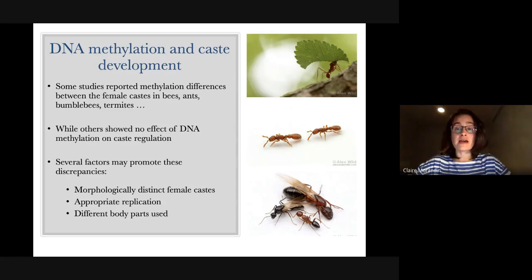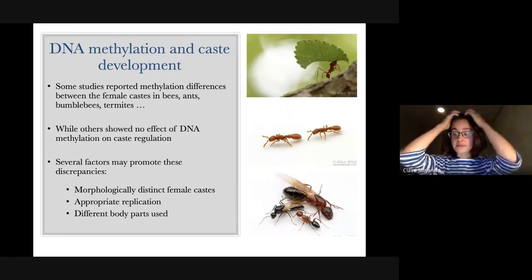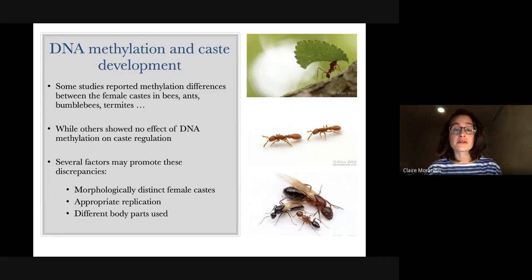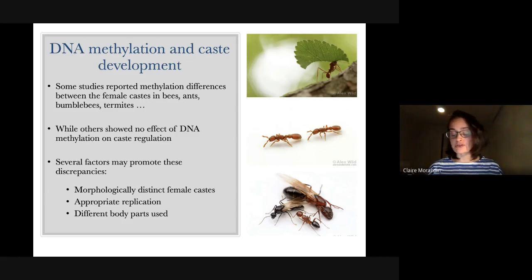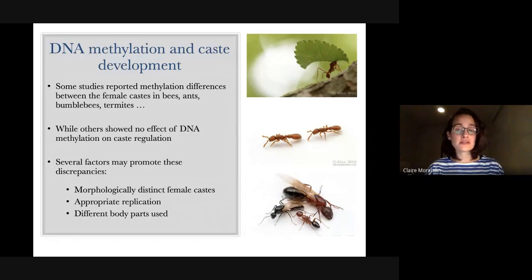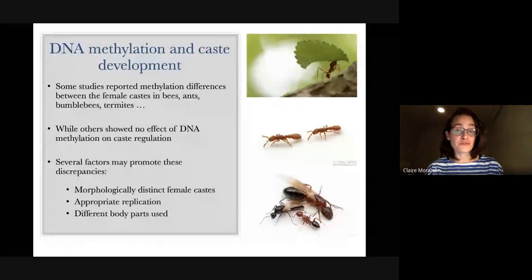Previous studies have suggested that DNA methylation plays an important role in caste differentiation of social insects. There have been studies on some social insects reporting differences in DNA methylation between queens and workers. But there have also been recent studies showing no effect of DNA methylation on caste regulation. It's a very controversial topic — whether or not DNA methylation is actually crucial — and there are a lot of differences across studies in terms of number of replicates, study organism, and body part used.